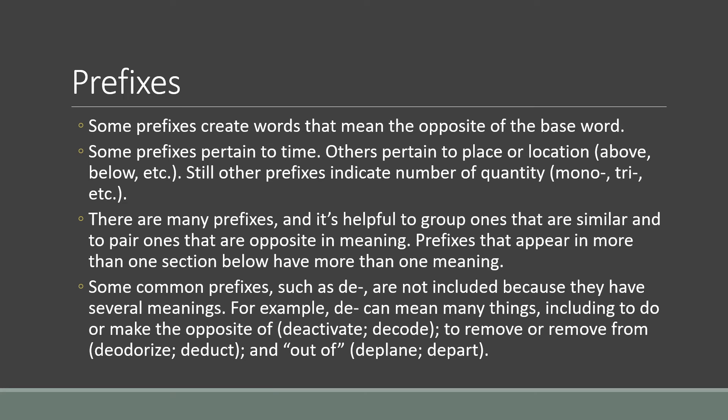Now let's go back to talking about prefixes. Some prefixes create words that mean the opposite of the base word. Some prefixes pertain to time; others pertain to place or location, such as above or below. Still others indicate number or quantity — for example, 'mono' for one, 'tri' for three, and so on. There are many prefixes, and it's helpful to group ones that are similar and to pair ones that are opposite in meaning.